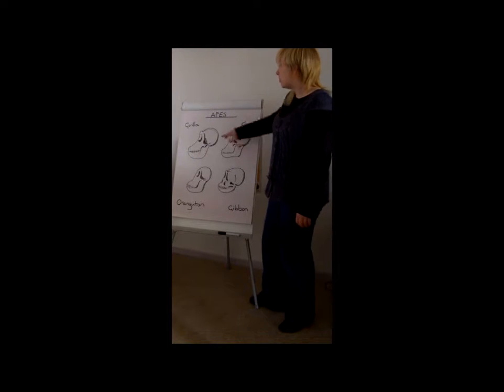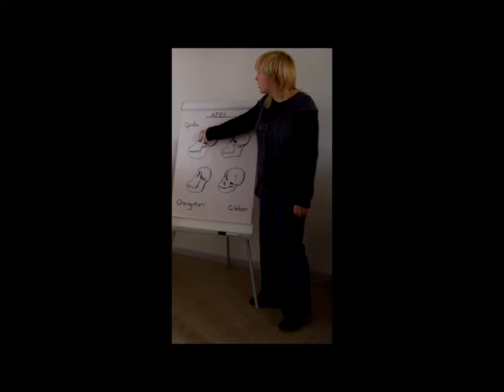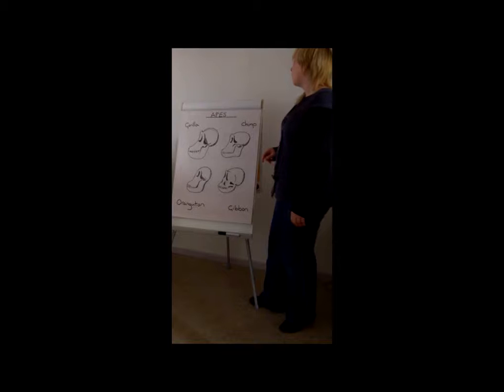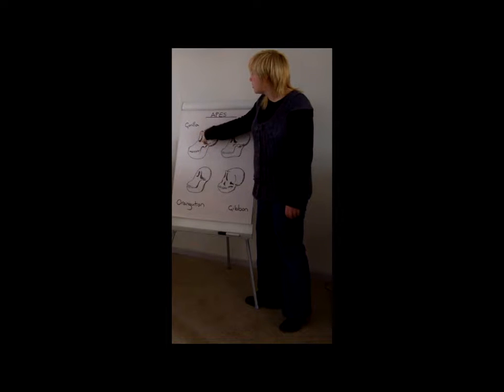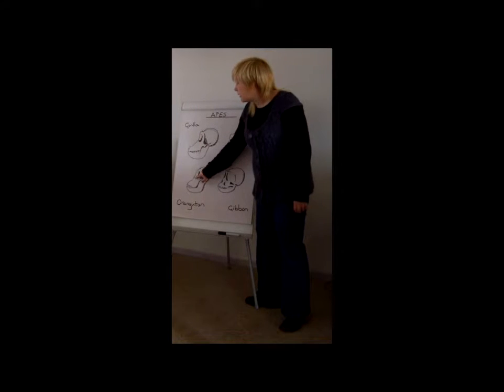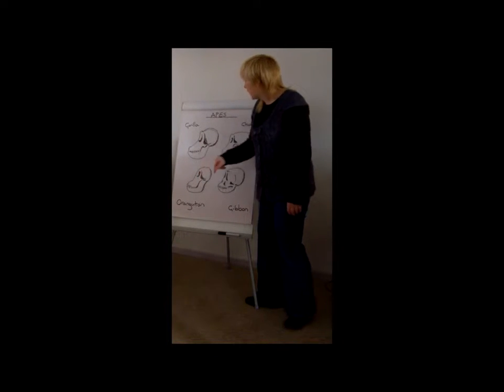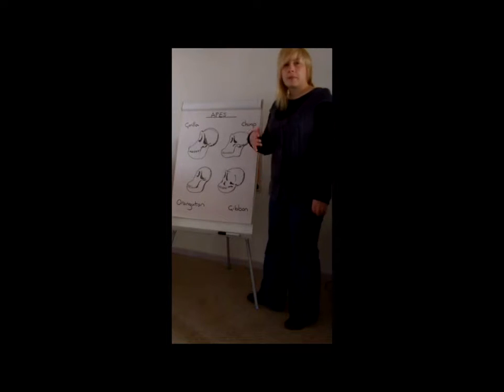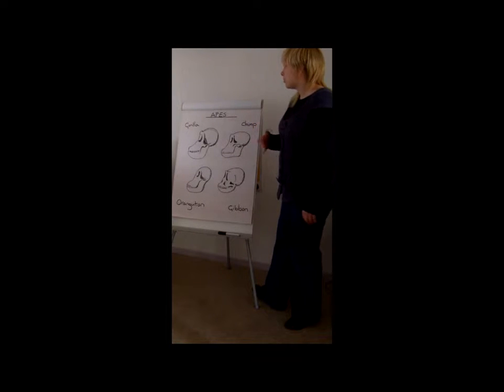Another feature they all have in common is they all have this bony ridge of protection around the eye orbits. It's more defined in some species than in others though. For instance, you can see it's more defined in the gorilla than it is in the orangutan. And that all of course helps make it easy to identify which species the skull belongs to.